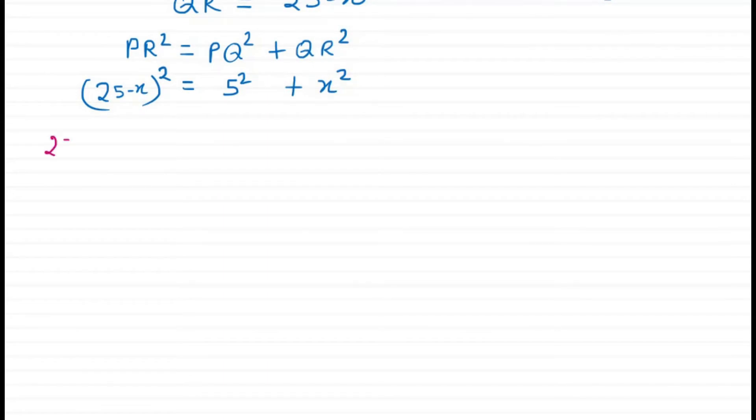After simplifying, we get 25 squared plus x squared minus 2 times 25x. I expanded the formula (a minus b) whole squared. This equals 25 plus x squared. We can cancel x squared on both sides.